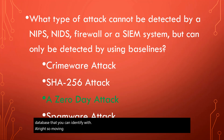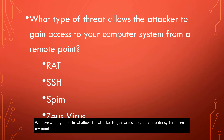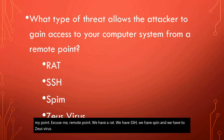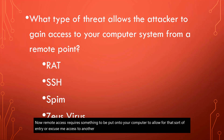What type of threat allows the attacker to gain access to your computer system from a remote point? We have a RAT, SSH, SPIM, and the Zeus virus. Remote access requires something to be put onto your computer to allow for that entry, and the only one on this list that does that is a RAT — it stands for Remote Access Trojan.